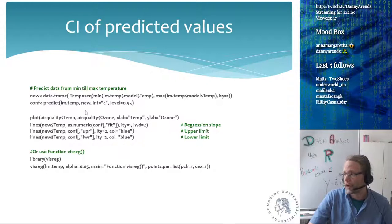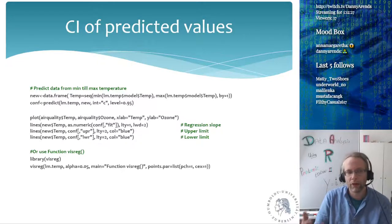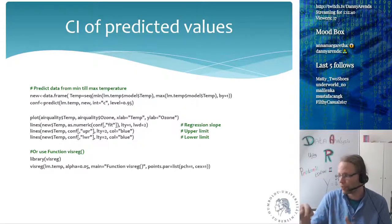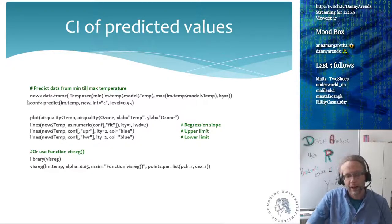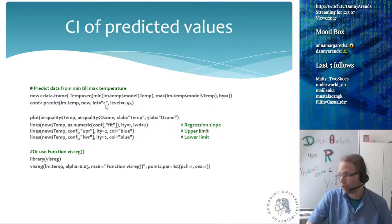I can also calculate it myself using the predict function. First, I make a data frame with one column called temperature — the input to our model — using a sequence from the minimum to the maximum temperature, increasing by one degree each time. I use the predict function with my model, specifying this range as the new data (the x-axis), and set interval to 'confidence' with level 0.95 — which is 1 minus the alpha that visreg uses.